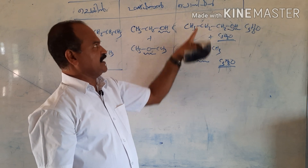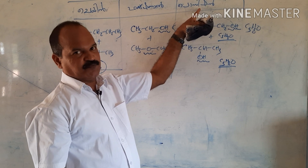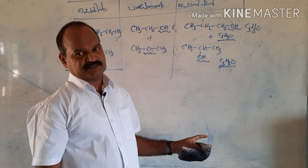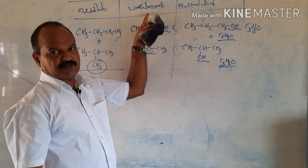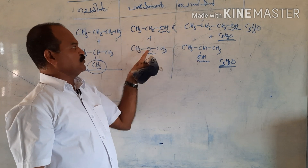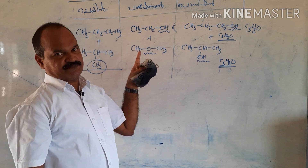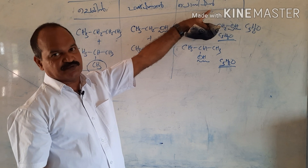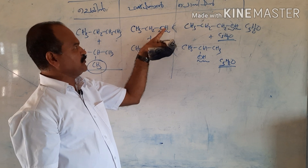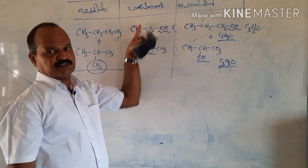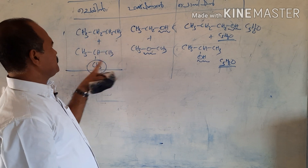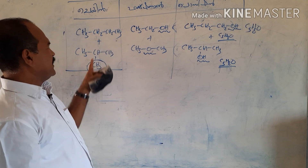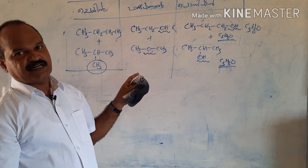Position isomers are important. It is possible to place a functional group at a different position on the carbon chain. When the functional group occupies a different position, the compound exists as a position isomer. The functional group is fixed but its position along the chain changes.